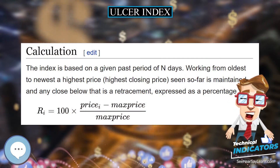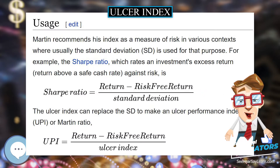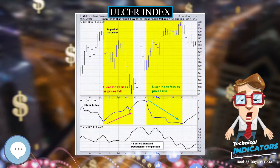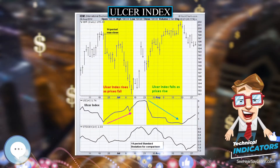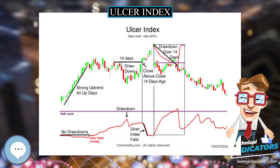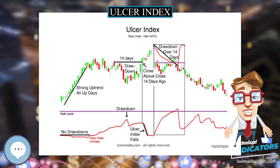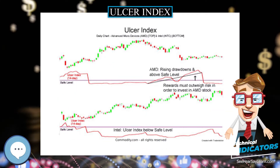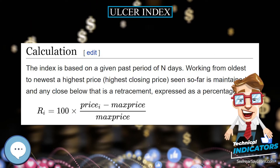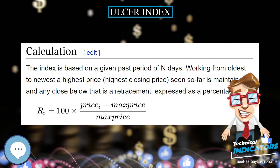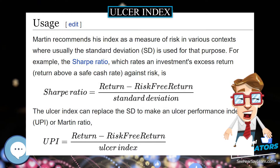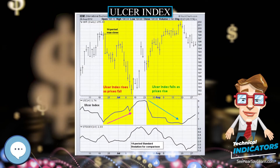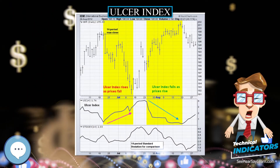The Ulcer Index is a stock market risk measure or technical analysis indicator devised by Peter Martin in 1987 and published by him and Byron McCann in their 1989 book 'The Investor's Guide to Fidelity Funds'. It is designed as a measure of volatility, but only volatility in the downward direction — i.e., the amount of drawdown or retracement occurring over a period. Other volatility measures like standard deviation treat up and down movement equally, but most market traders are long and so welcome upward movement in prices.